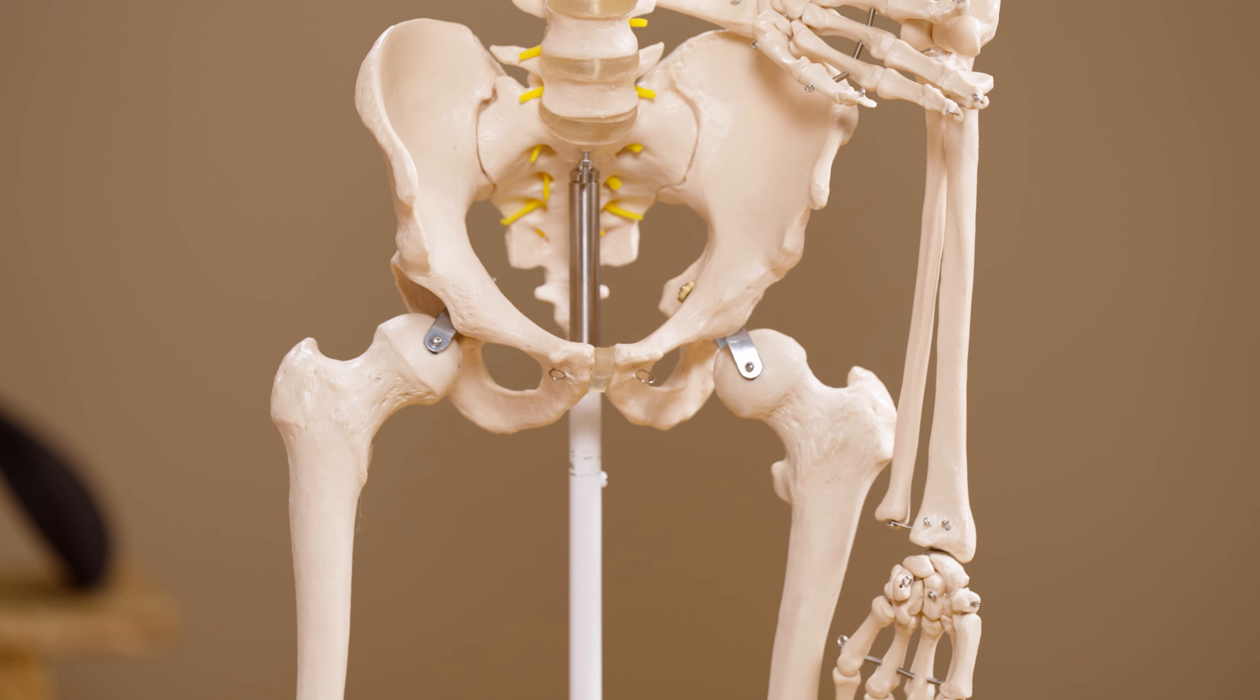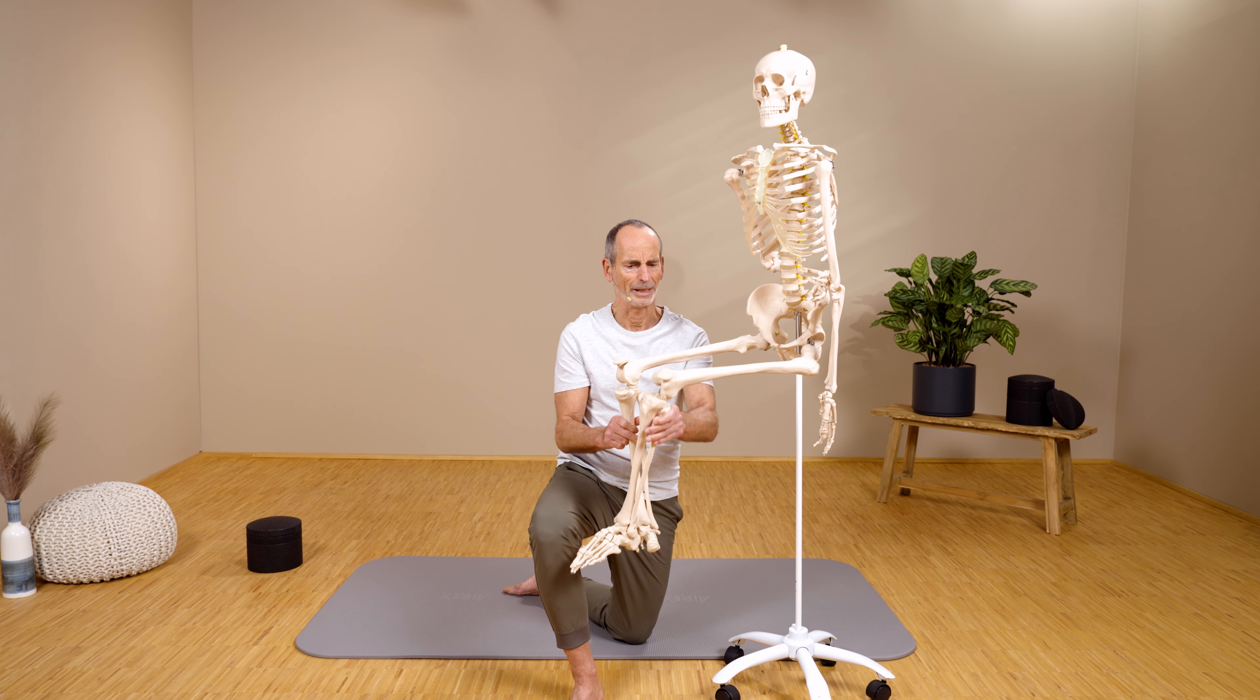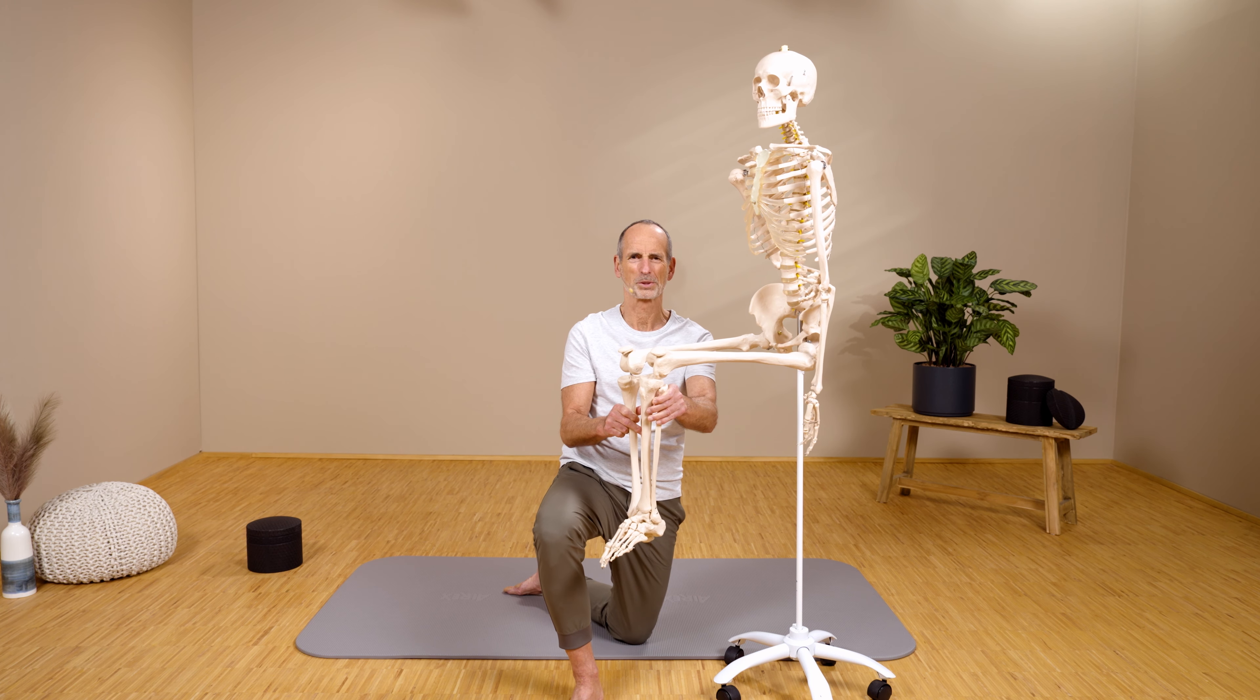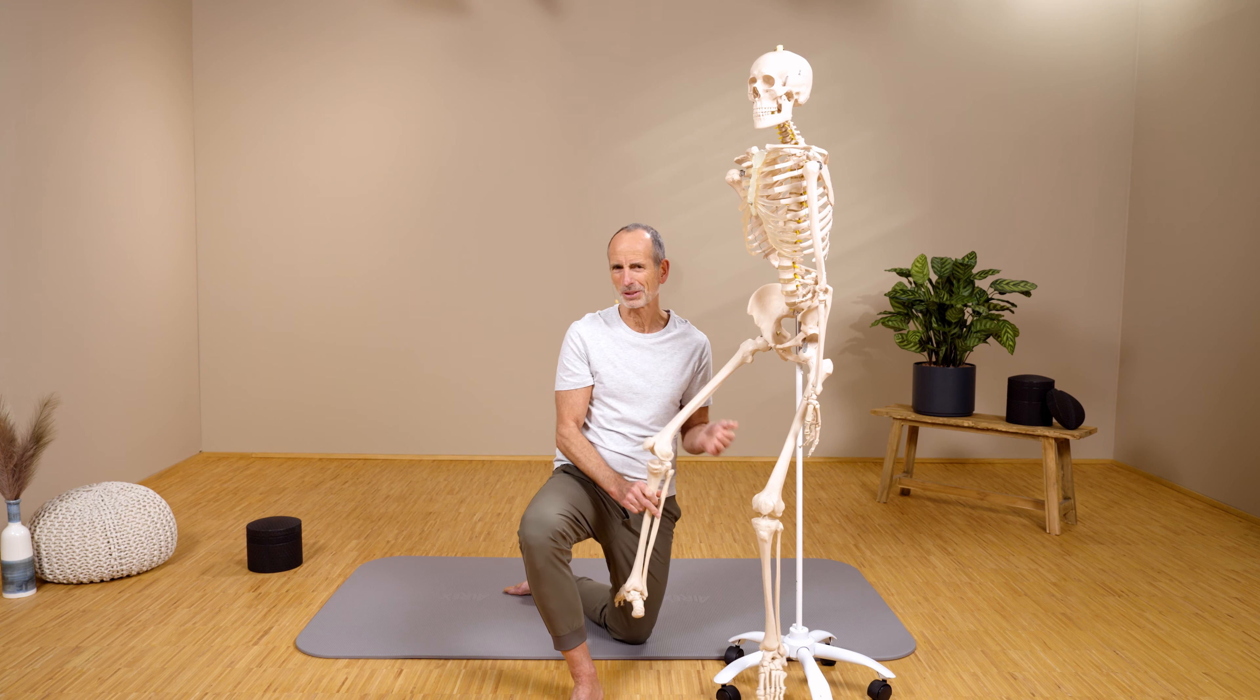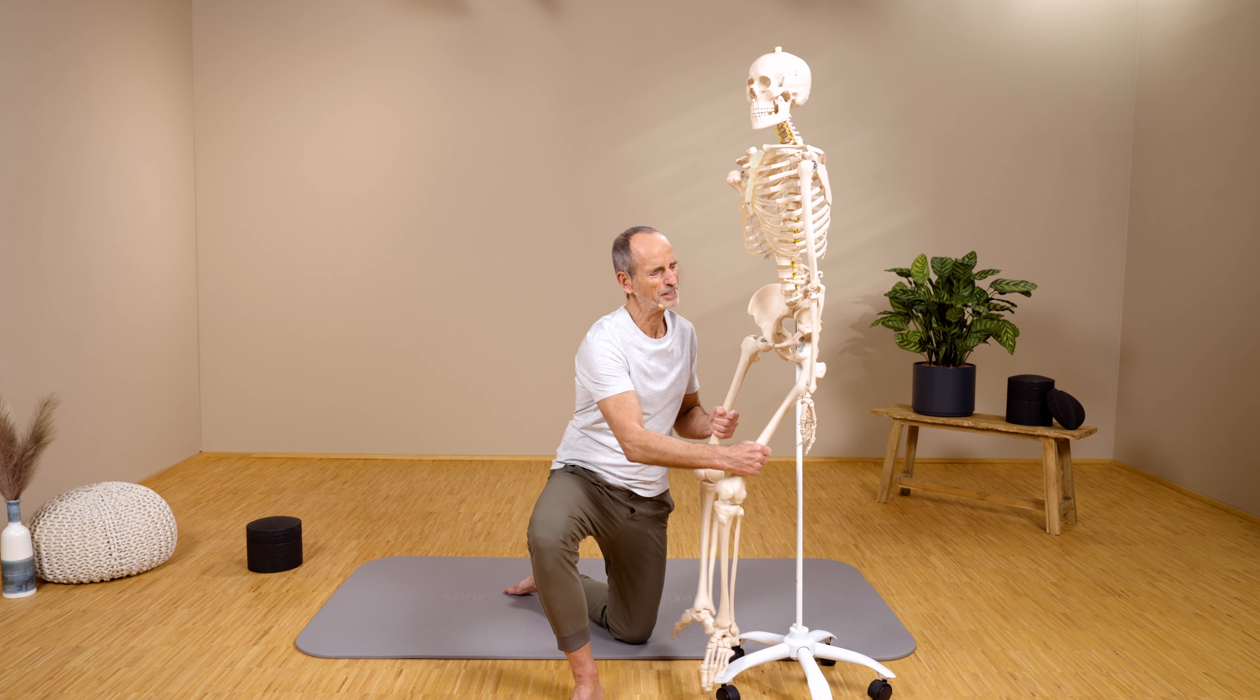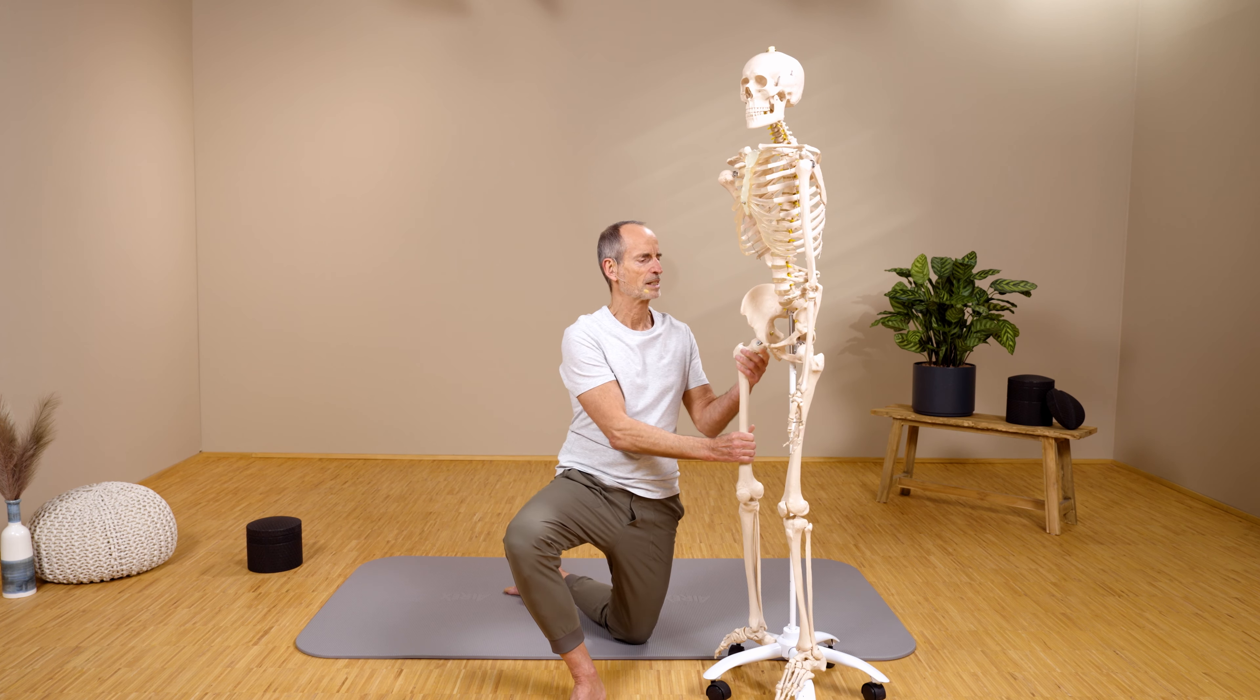When we sit, we practically have our leg raised all the time in that position. That means it is constantly shortened and it wouldn't be a problem if it were balanced out. But we sit too much and hardly compensate in our everyday lives, which is why there are also huge problems, especially as people get older.